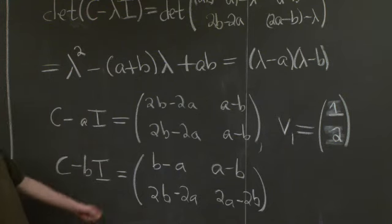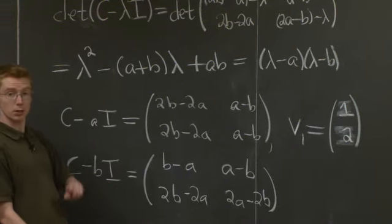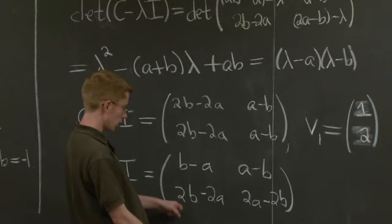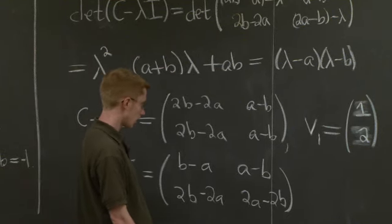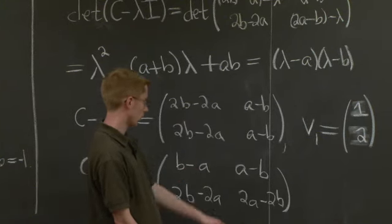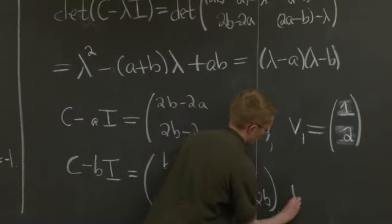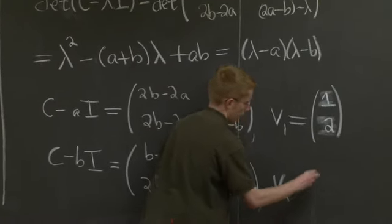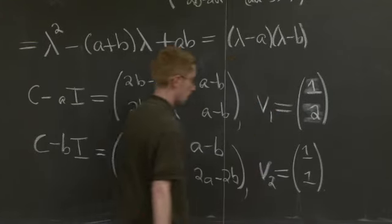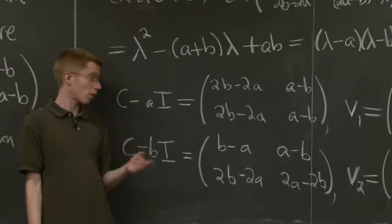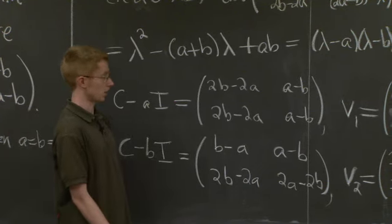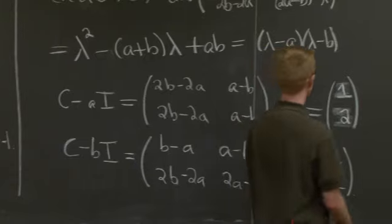So now what's in the null space of this matrix? Well, what you can see is that this column is negative 1 times that column, so our second eigenvector is just going to be 1, 1. And I should remind you that if you have a harder example, you can just find these null spaces by elimination, like we always do.